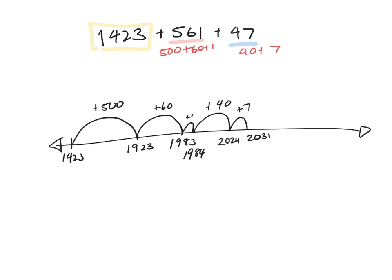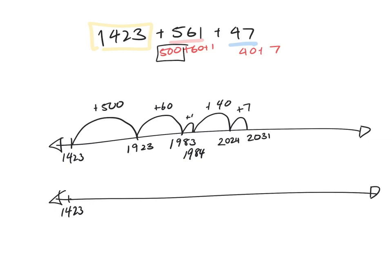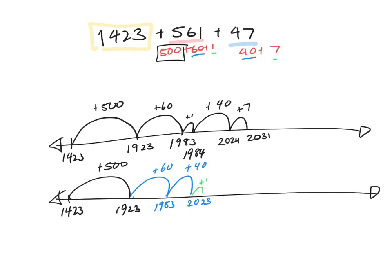Here is a different way to solve the same problem. Starting at 1,423, do hundreds first: add 500 to land on 1,923. Then do all the tens together: add 60 to land on 1,983, then add 40 to land on 2,023. Finally add the ones: plus 1 then plus 7, landing on 2,031. Same answer, just a different order of jumps.